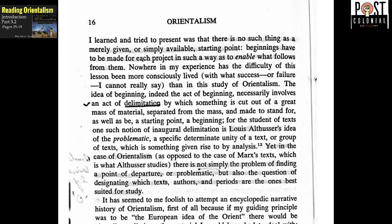For the student of text, one such notion of inaugural delimitation is Louis Althusser's idea of the problematic — a specific determinate unity of a text or group of texts which is something given rise to by analysis. Yet in the case of Orientalism, as opposed to the case of Marxist texts which is what Althusser studies, there is not simply the problem of finding a point of departure or problematic, but also the question of designating which texts, authors, and periods are the ones best suited for study.